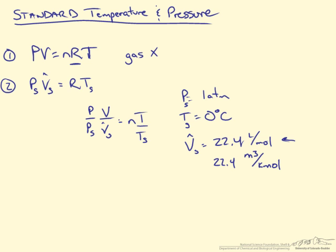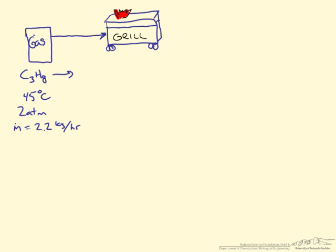Let's provide an example of this. Let's take a look at an example where we're flowing propane gas into say a grill, and pardon my horrible drawings. Let's say that gas is at 45 degrees Celsius, 2 atmosphere, and we know that we're flowing it at a mass flow rate of 2.2 kg per hour.